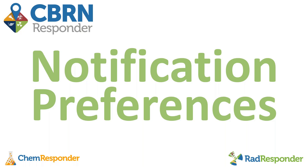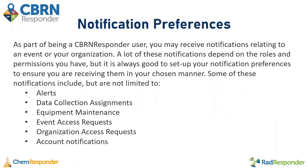Notification preferences are going to be really important, especially if you're a responder or part of a field team and you're going to be receiving assignments or alerts from the event. As part of being a CBRN Responder user, you may receive notifications relating to an event or your organization. A lot of these notifications depend on the roles and permissions that you have, but it is always a good idea to set up your notification preferences to ensure you're receiving them in your chosen manner. Some of these notifications include, but are not limited to, alerts, data collection assignments, equipment maintenance, event access requests, organization access requests, and additional account information.